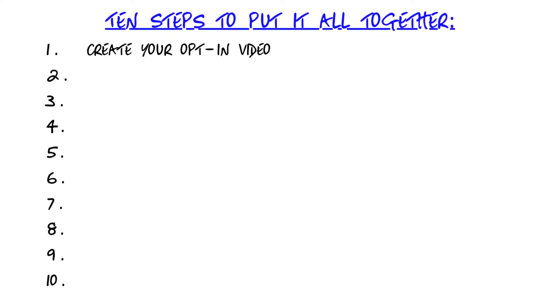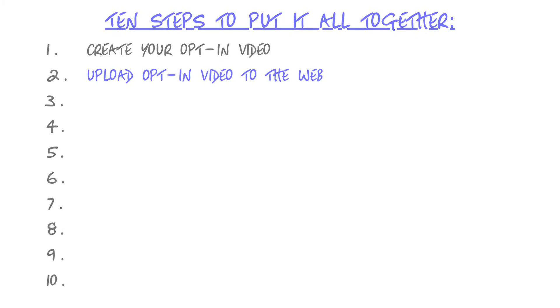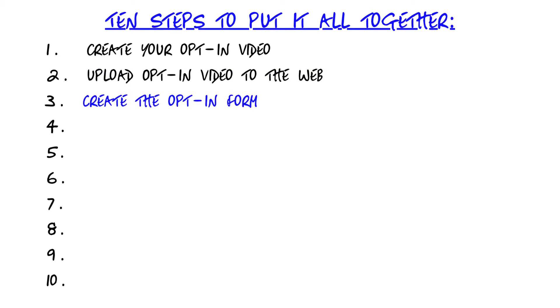Here's exactly what I did to create the sequence that you've watched in this video series that I called the mini-series for experts. And I'll even tell you two rookie mistakes that I made so you can avoid them. The steps were as follows. Number one: create a video that entices people to opt-in. Two: upload that video to the web. Three: create the opt-in form that people fill out after they see your video.